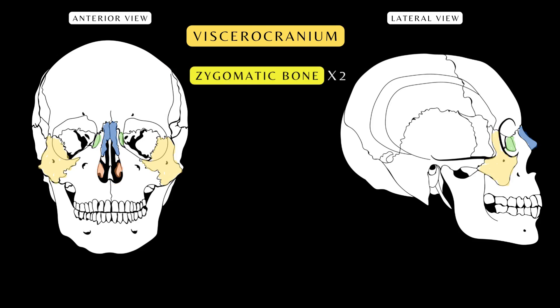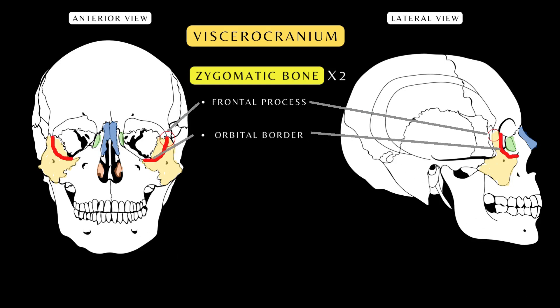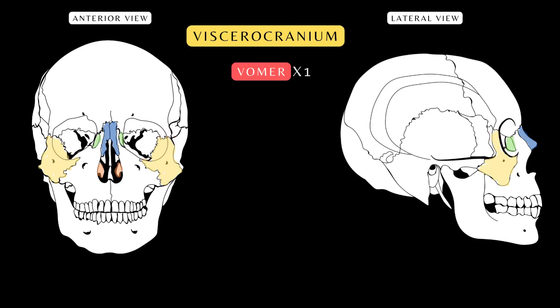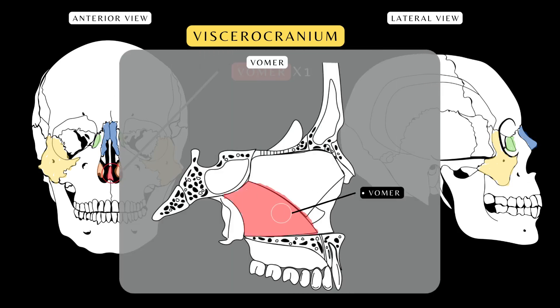This is the zygomatic bone, also called the cheekbone or malar bone. Its frontal process articulates superiorly with the frontal bone, and its orbital border forms the lateral border of the orbit. An important landmark is the zygomaticofacial foramen — the zygomaticofacial nerve and artery exit through the foramen to innervate the face. The vomer is a small midline bone that occupies and divides the nasal cavity, shown here in a sagittal section of the nasal cavity.